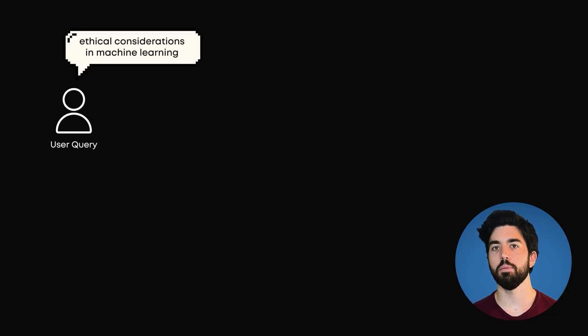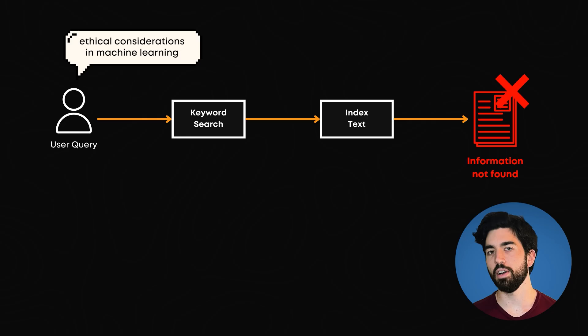If we come back to our AI ethics example, a text referring to AI ethics as something like ethical considerations in machine learning, a keyword search won't find it. That's where we need something smarter.